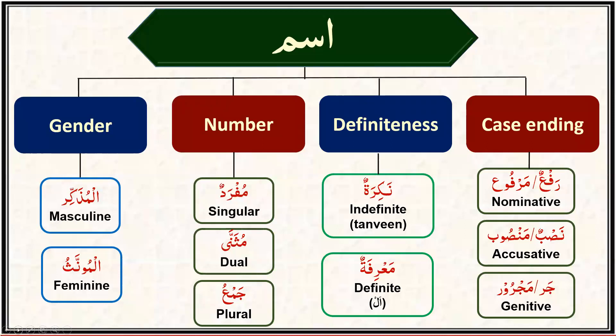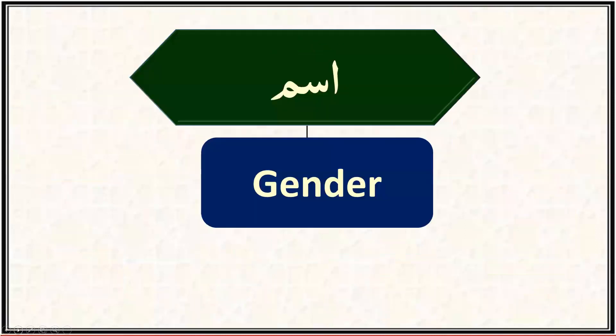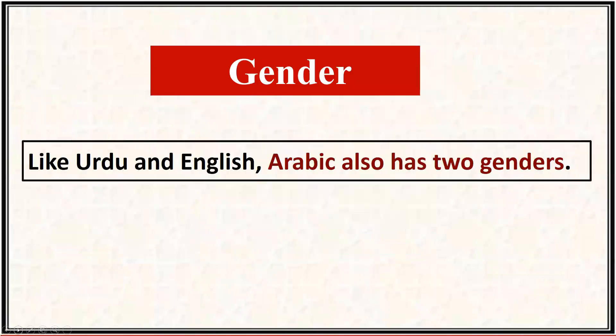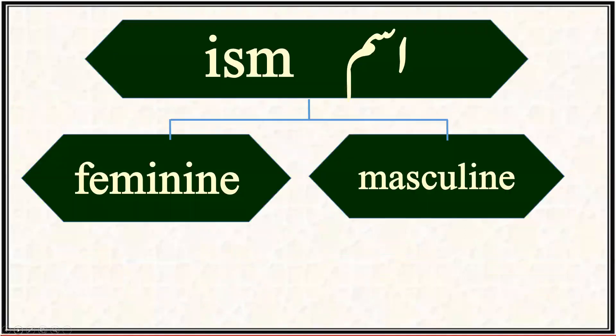Today we are going to start our studies from gender. Like every other language, Arabic also has two types of gender: masculine and feminine. The next question is: how are we able to identify which ism is masculine and which ism is feminine?